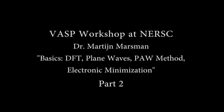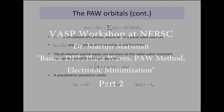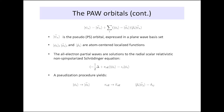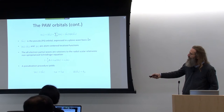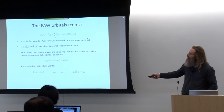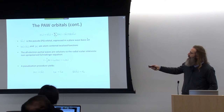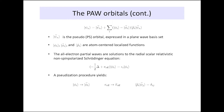These local functions are solutions to an atomic problem represented on radial logarithmic grids. There's a pseudization procedure to compute all-electron partial waves, pseudized partial waves, a pseudized local potential, and procedures to construct projector functions. The only real requirement is that they're dual to the pseudized partial waves.